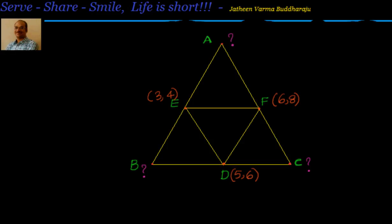Hello friends, hearty welcome to you. We are going through coordinate geometry straight lines and we have an interesting problem to solve. We have been given the midpoints of the sides of a triangle. We have to find out the equations of the sides and also find out the vertices or angular points of the triangle. We have been given DEF; we have to find the equations of AB, BC and CA, and also find the coordinates of A, B and C.